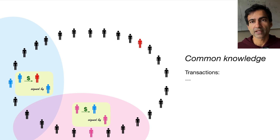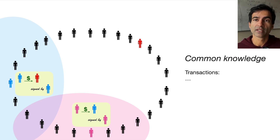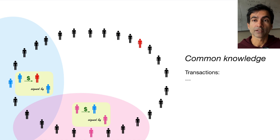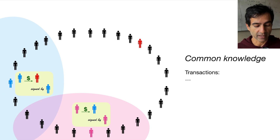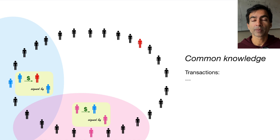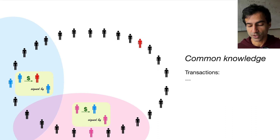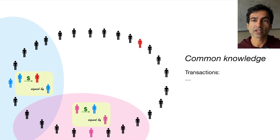The second problem is that if people are announcing transactions all over the world, then different people will hear about those transactions at different times. For example, if this blue person announces a transaction and this other person announces a transaction, then the set of people that hear about those transactions will not be the same. And it's unclear how we should maintain the common knowledge of all transactions — which transaction should be added to that common knowledge, and who knows about it?